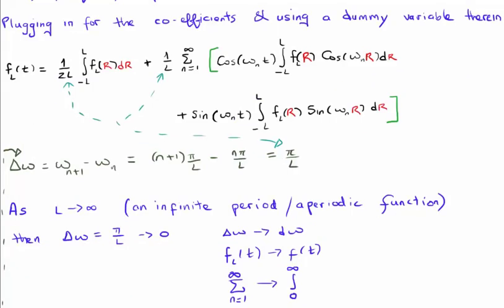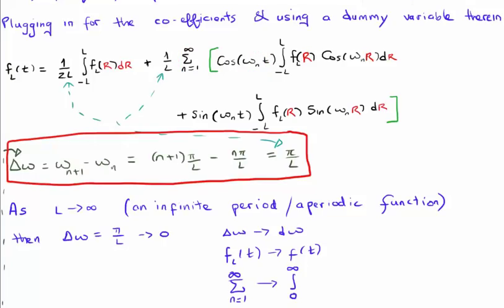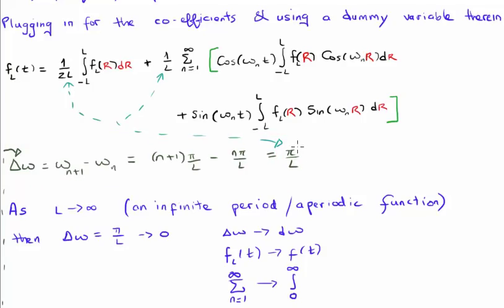This equation has discrete components due to the summation. But the discrete variable is omega sub n. Through the definition of omega, we can therefore calculate delta omega, which is omega n plus 1 minus omega n, which turns out to be pi over l. This value for pi over l can be substituted in here and in here.